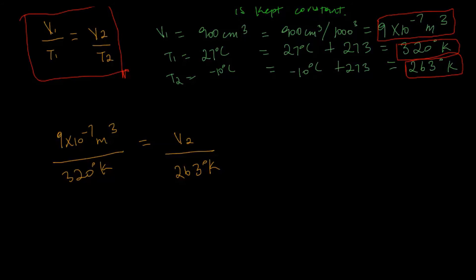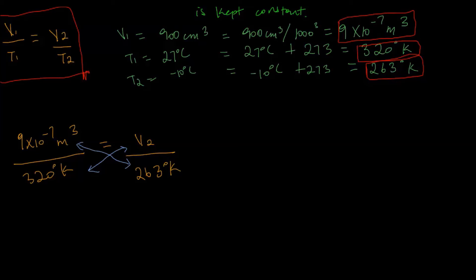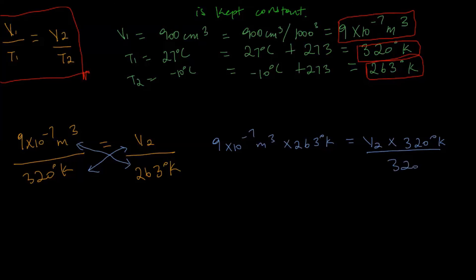We can do a cross multiplication — we multiply this by this and this by this. So in doing the cross multiplication we get: 9 times 10 to the minus 7 meters cubed multiplied by 263 degrees Kelvin equals V2 multiplied by 300 degrees Kelvin. To find V2, we divide both sides by 300 degrees Kelvin.